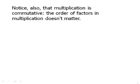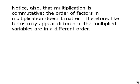Also, notice that multiplication is commutative. In other words, a times b equals b times a. You can switch the order around and it doesn't change the multiplication. So the order of factors in multiplication doesn't matter. Therefore, like terms may appear different if the multiplied variables are in a different order. So they're not really different. It's just a difference in appearance.